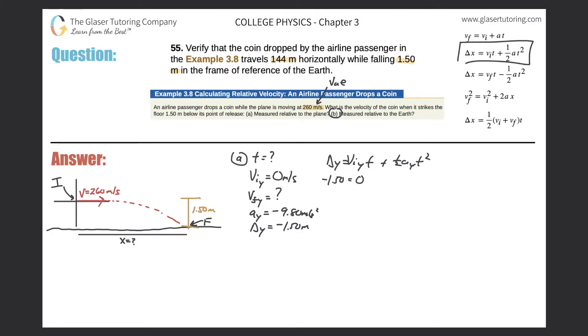So here we have negative 1.50 is going to equal zero, right, because that whole term goes to zero because the initial velocity in the y is zero, plus then one half times negative 9.80 times t squared. So it looks like we have negative 1.50 equals negative 4.90 t squared. Simply divide out the 4.90 from both sides.